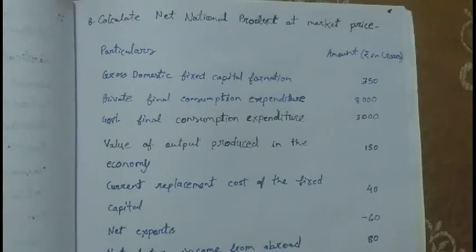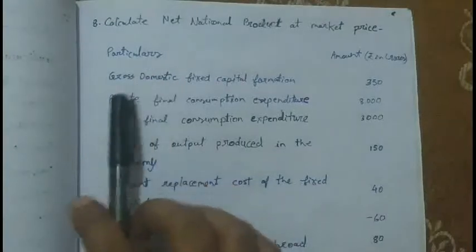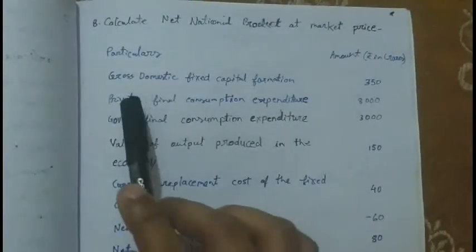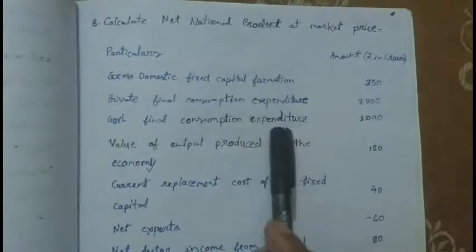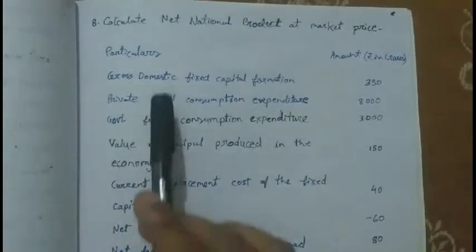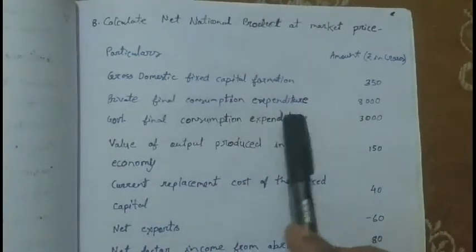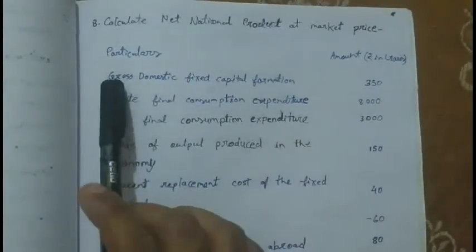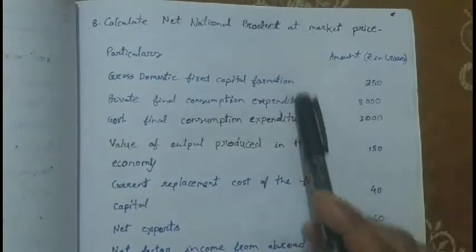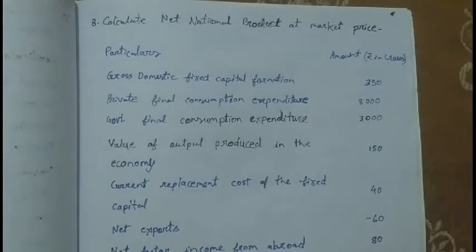Here is another question: calculate net national product at market price. Particulars and amounts are given, including gross domestic fixed capital formation, capital expenditure, government final consumption expenditure. So this is an expenditure method question. It is a critical question because we are getting private final consumption expenditure, government final consumption expenditure, and gross domestic capital formation.